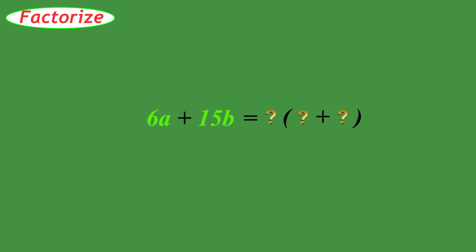Let's do another example. Factorize 6A plus 15B. What is a factor of both 6A and 15B that could go in front of the parentheses? It's 3. So 3 times what equals 6A? It must be 2A. And 3 times what equals 15B? It must be 5B.